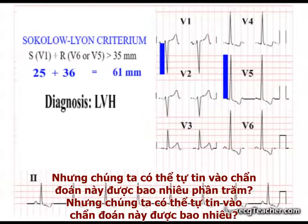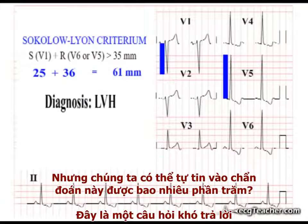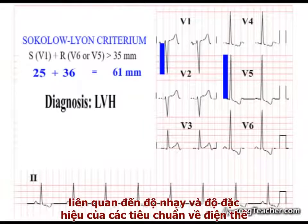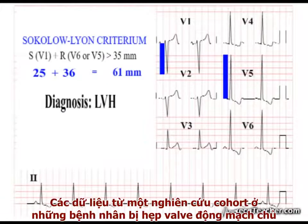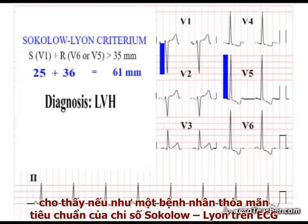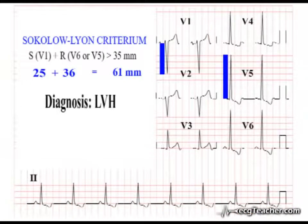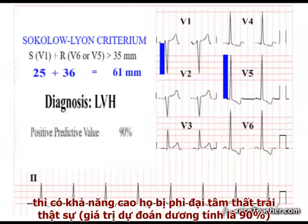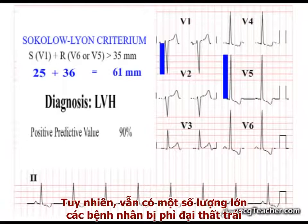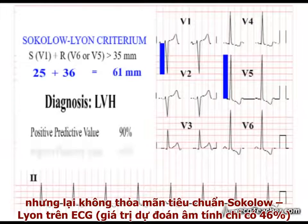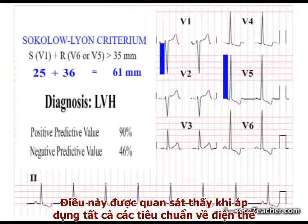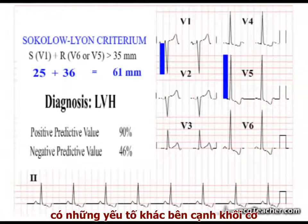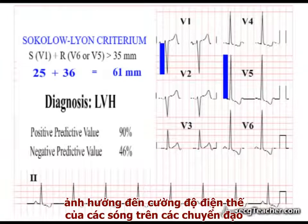But how much confidence can we have in this diagnosis? This is a difficult question to answer, as the results of studies on the specificity and sensitivity of voltage criteria vary depending on several factors. Cardiac MRI data from a cohort of patients with aortic stenosis suggests that if a subject meets the Sokolow-Lyon criterion on their ECG, they have a high probability of underlying LVH on scanning. However, a high proportion of individuals with underlying LVH do not meet the criterion on their ECG. This pattern is observed with all voltage criteria and probably reflects the fact that factors other than muscle mass influence the amplitude of deflections in the leads.